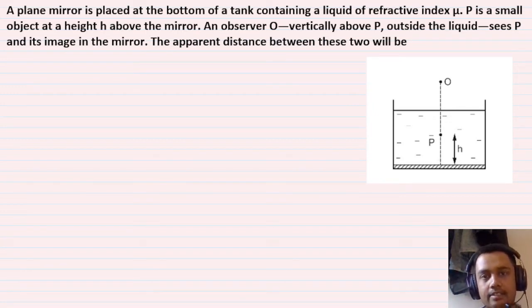We need to find the apparent distance between these two - between object P and its image in the mirror.